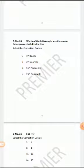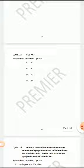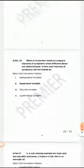Which of the following measure is less than mean for asymmetrical distribution? Mode. 5 combination 5 is equal to 1.